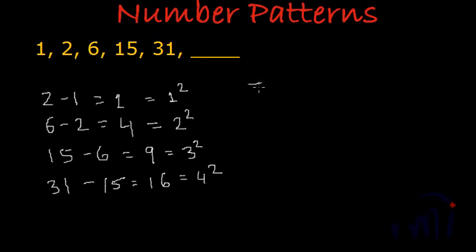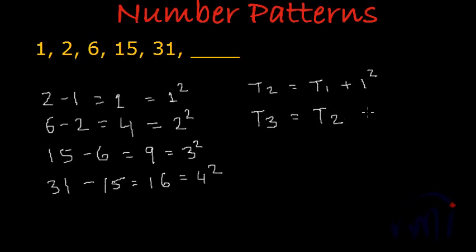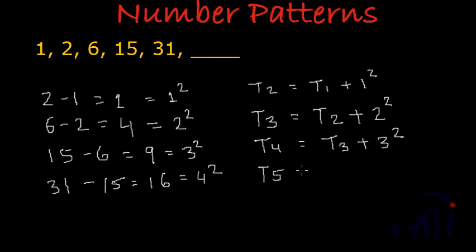So the second term is equal to the first term plus 1 square. The third term equals t2 which is 2, plus square of 2 which is 4 — 2 plus 4 gives us 6. The fourth term t4 equals the third term plus the square of 3. And the fifth term t5 equals t4 plus square of 4 — t4 is 15 and square of 4 is 16, and 15 plus 16 gives us 31.